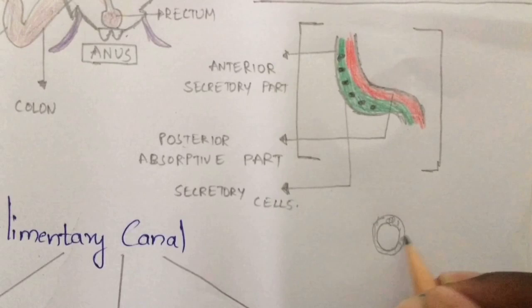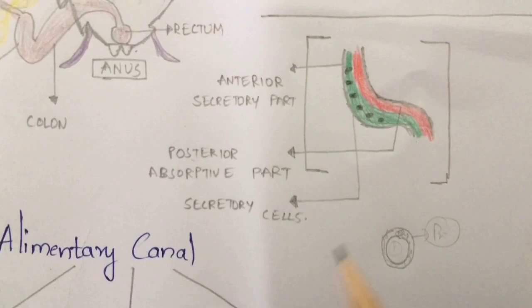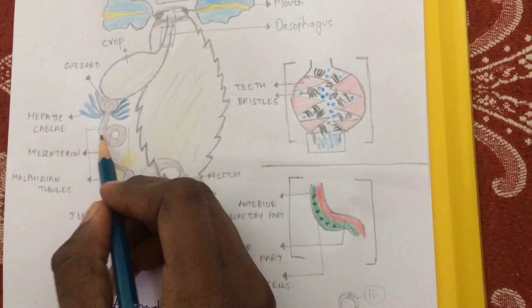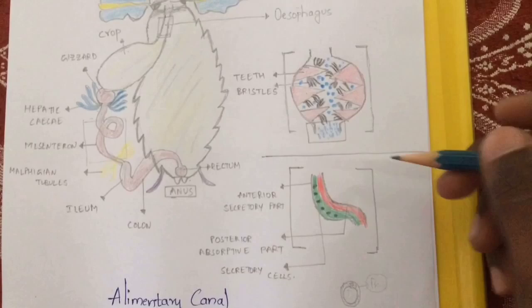The peritrophic membrane is a layer which mainly covers the bolus — it forms a layer at the outer part of the bolus. The peritrophic membrane mainly helps in the smooth movement of the bolus, so that the bolus cannot be damaged, and the parts of the cockroach also cannot be damaged because of the peritrophic membrane.